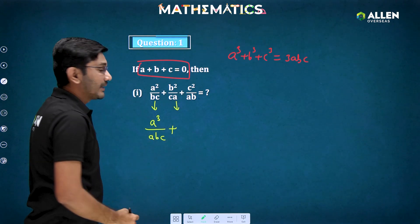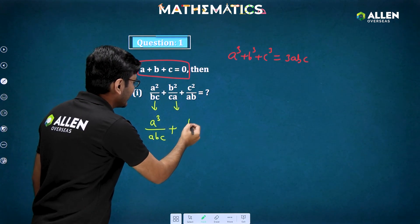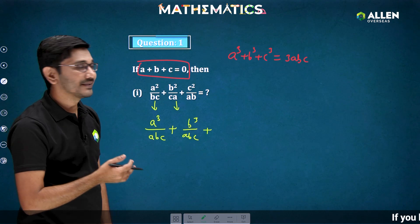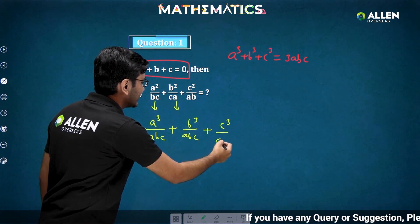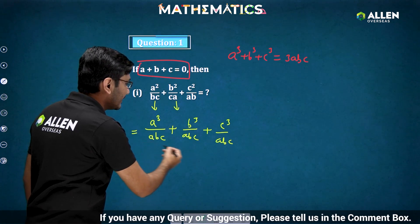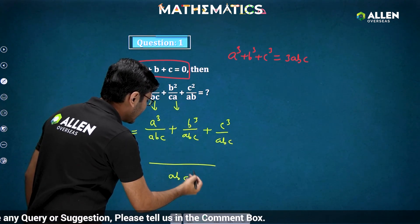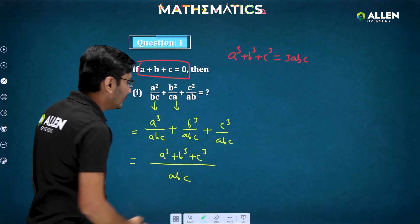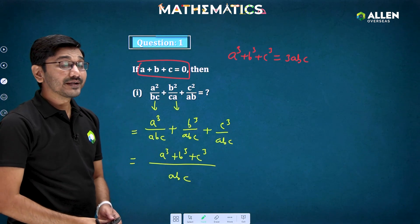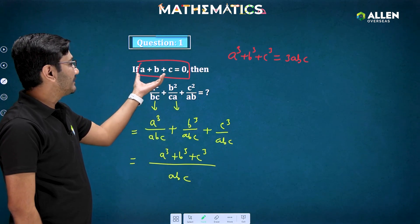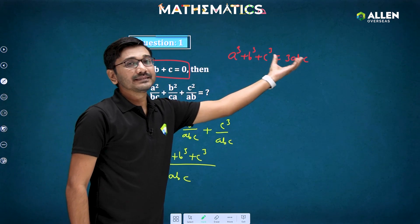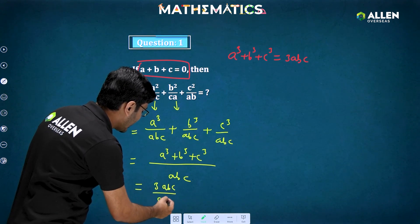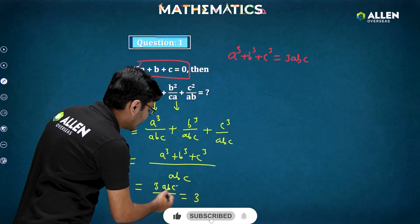Multiply the third term by c/c to get c³/(abc). This gives the same denominator abc in each term, so we can add the numerators directly: (a³ + b³ + c³) / abc. Since a + b + c = 0, we know a³ + b³ + c³ = 3abc. Therefore the numerator is 3abc and the denominator is abc, giving the answer 3.